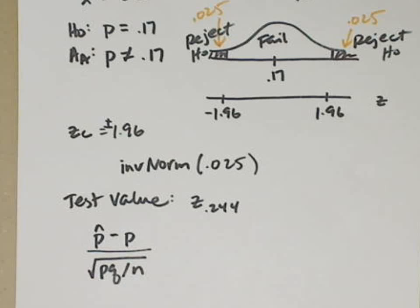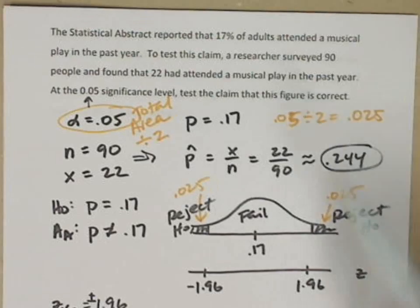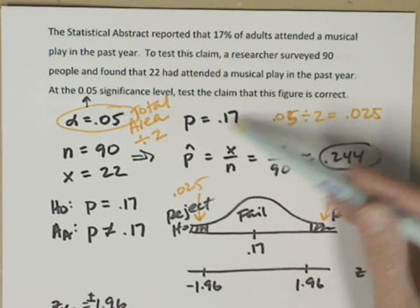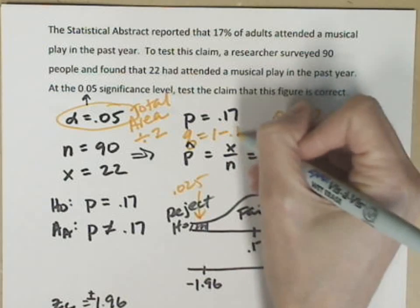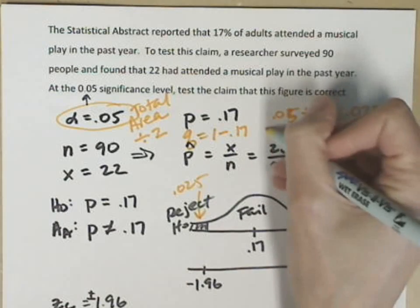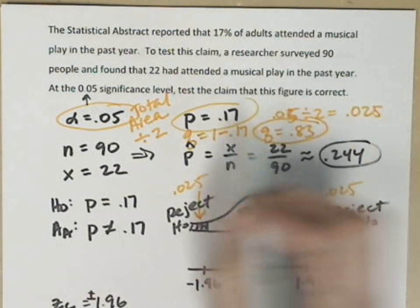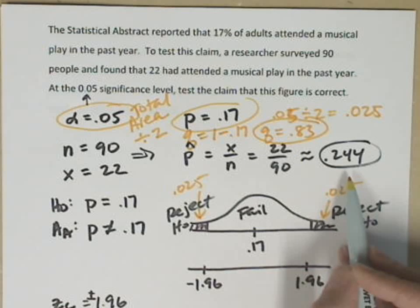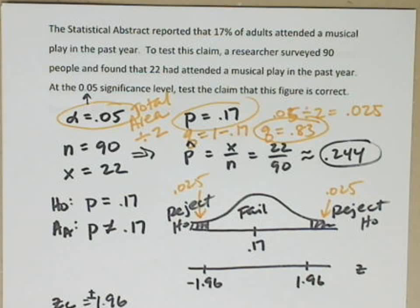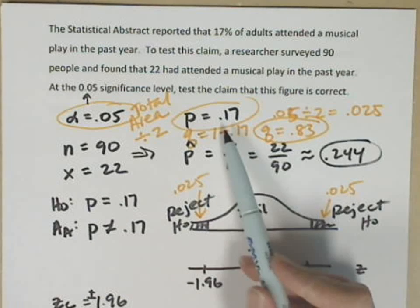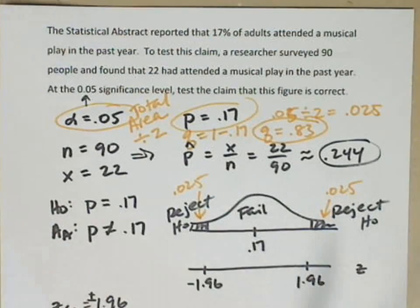I've got all the information except q. If p is .17, that means that q is 1 minus .17. That tells me that q is .83. So I've got p, I've got q, and I've got the p-hat, which is my test proportion. I'm going to use the .17, the .83, the .244, and remember that n was equal to 90.